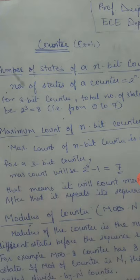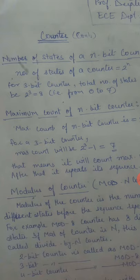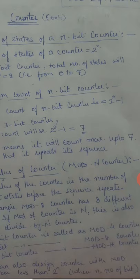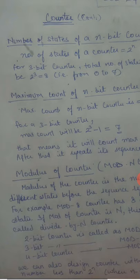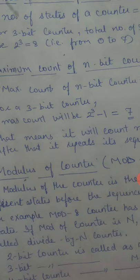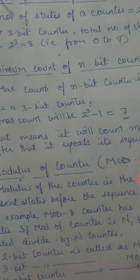Next is the maximum count of an n-bit counter. The maximum count of an n-bit counter is 2 to the power n minus 1. That is, total number of states minus 1 is the maximum count of any counter. For example, for a 3-bit counter, the maximum count will be 2 to the power 3 minus 1, which equals 7. It means a 3-bit counter will count a maximum of 7, going from 0, 1, 2, 3, 4, 5, 6, and a maximum value of 7, after which it will start repeating itself.